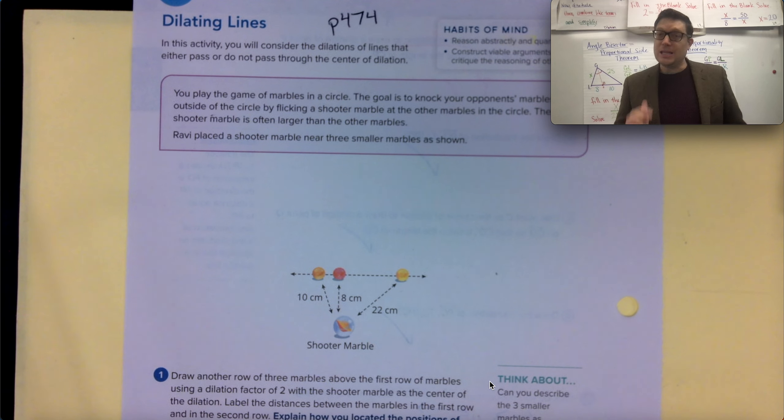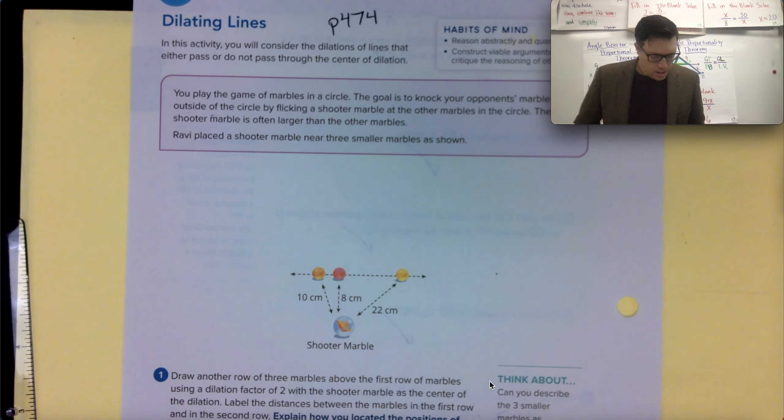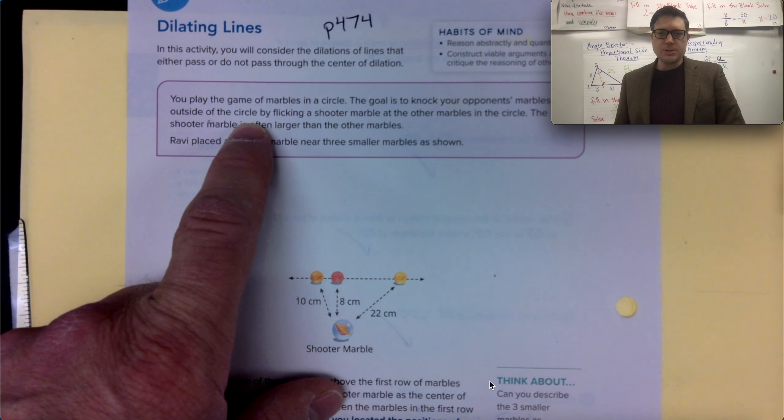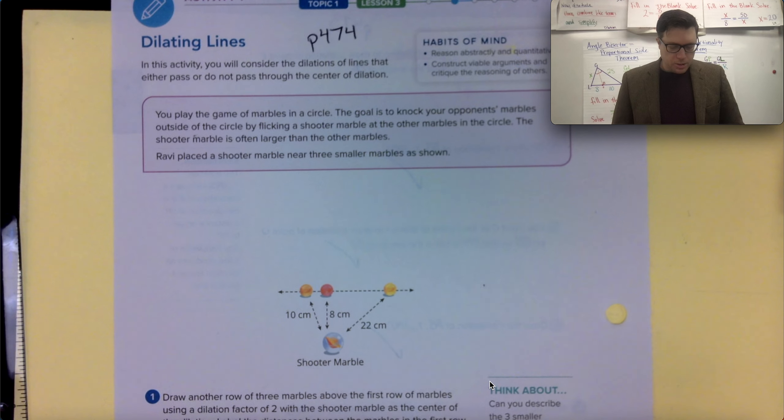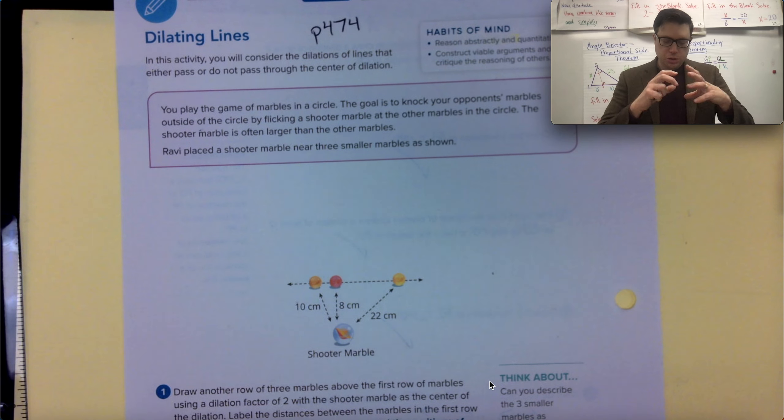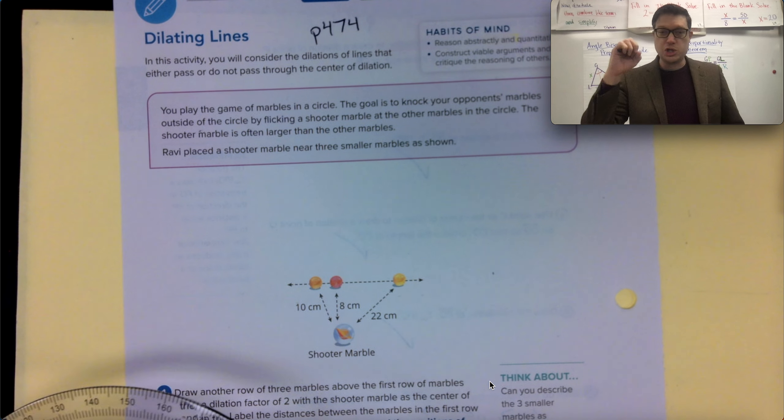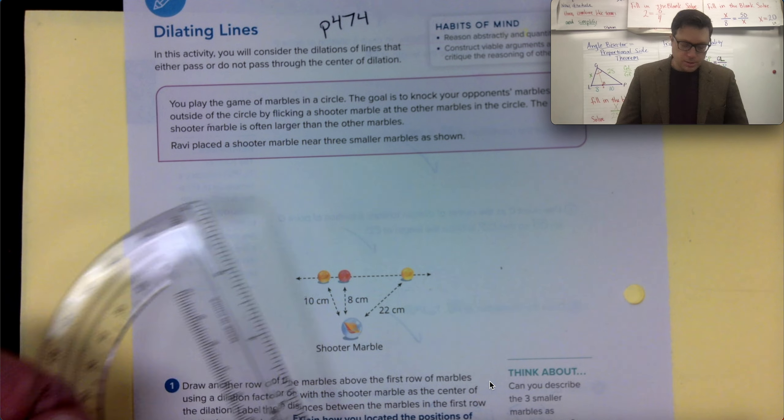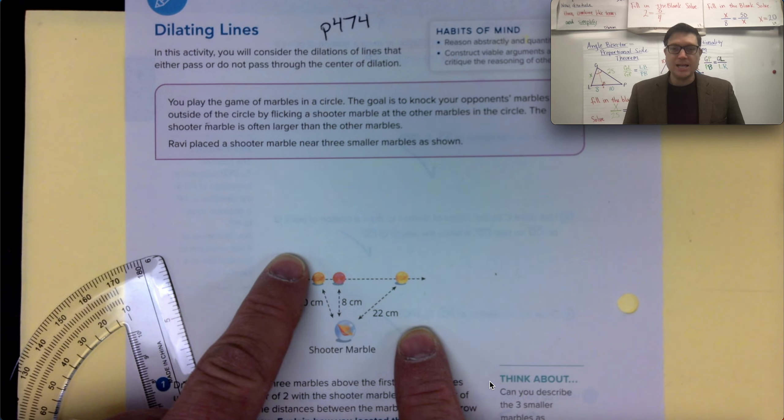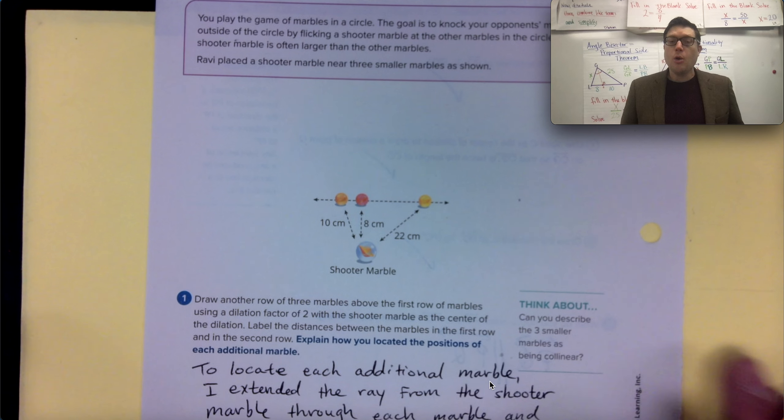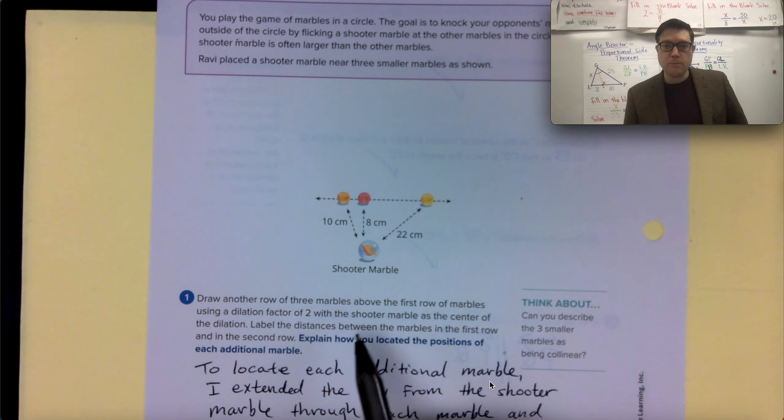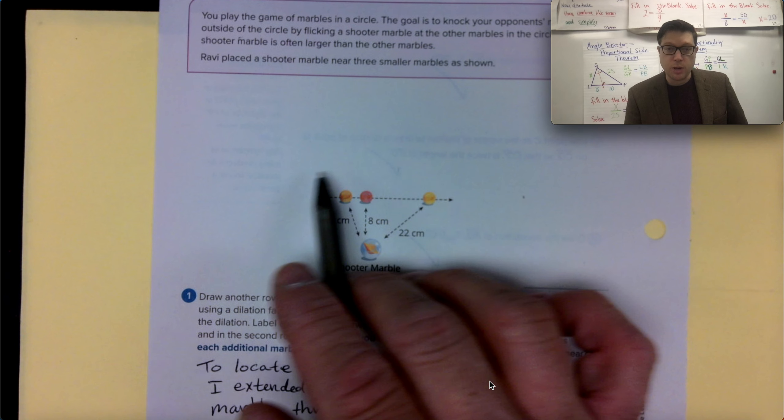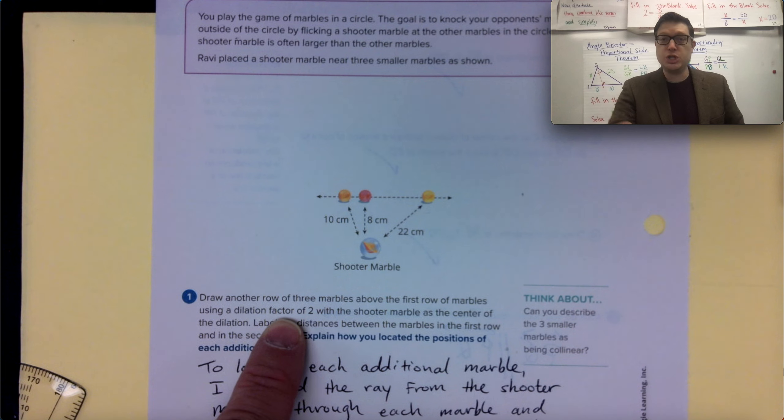You're going to consider dilations of lines that must either pass or do not pass through a center of dilation. Let's consider this. You're playing a game of marbles in a circle, and the goal is to knock your opponent's marble outside the circle by flicking the shooter marble at the other marbles in the circle. The shooter marble is often a larger, steely type marble. Ravi placed a shooter marble near the three smaller marbles as shown, and he's going to get ready to knock them out. Now, we're going to draw another row of three marbles above this first row, and we're going to use a dilation factor of two.